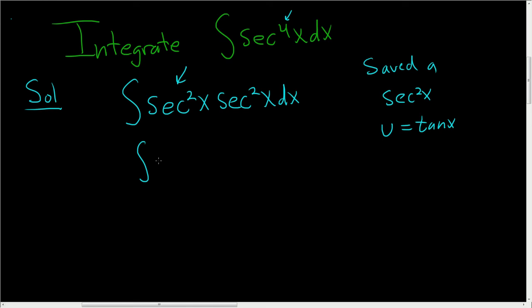Well, identities. Secant squared is 1 plus tangent squared x, and then here we still have the secant squared x dx.